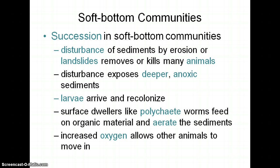Basically you have little larvae of worms and stuff like that that come and recolonize the anoxic sediments. Then you get things like polychaete worms that will come and feed on organic material, burrow through the dirt, and start to aerate the sediments — meaning they poke holes in it so water can circulate and oxygen can get in. Once oxygen is able to travel through, other animals can start to come. We call that succession — a succession of animals that recolonize an area after it's been disturbed.